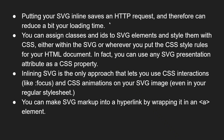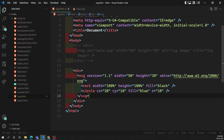Putting your SVG inline saves the HTTP request. With the img tag, using src causes the browser to make a separate HTTP call to fetch that file, whereas with inline SVG there is no separate HTTP request needed — this can reduce your load time a little bit. You can also assign classes and IDs to the SVG elements and style them with CSS, since all the rectangle and circle elements are now present directly in your HTML.